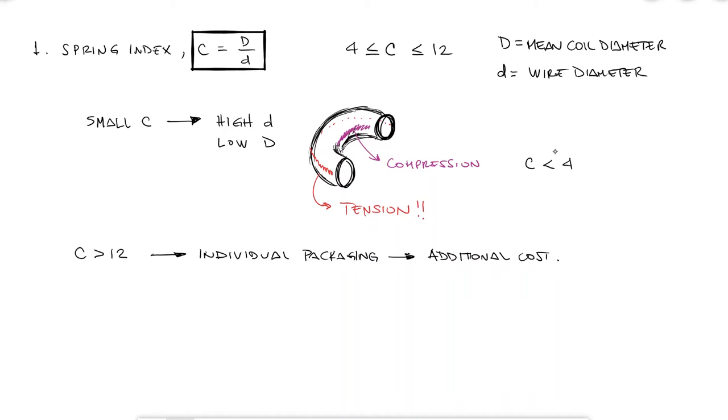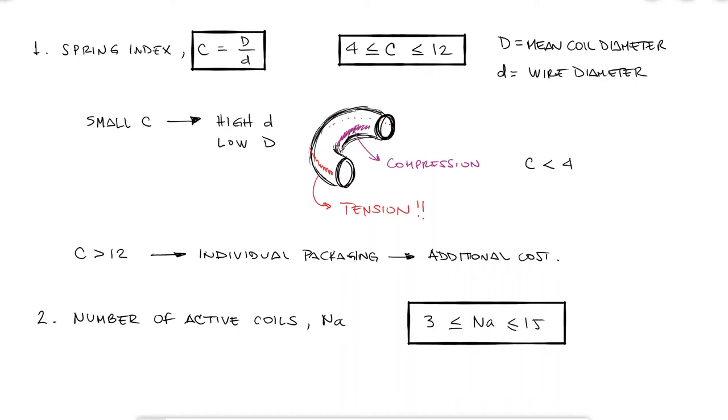The second recommended range is with respect to the number of active coils, and it is between 3 and 15. To maintain linearity when a spring is about to close, and since no spring is perfectly manufactured, meaning that the pitch will not be exactly the same from coil to coil, and we've already studied tolerances, it is necessary to avoid the gradual touching of the coils.